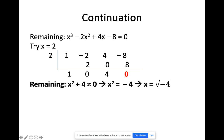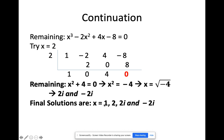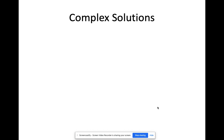Solving x² + 4 = 0: move 4 to the other side to get x² = negative 4. Taking the square root of both sides gives x = plus and minus the square root of negative 4, which equals plus and minus 2i. So the third and fourth solutions are 2i and negative 2i. The four answers are x = 1, 2, 2i, and negative 2i.